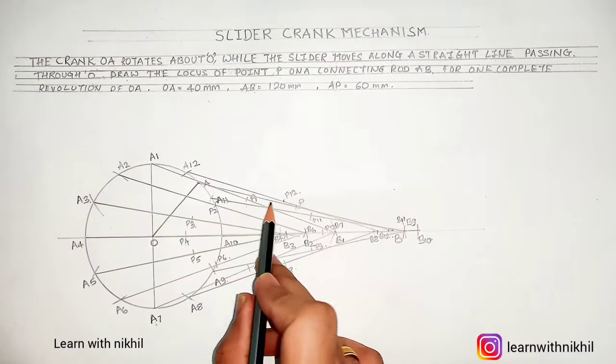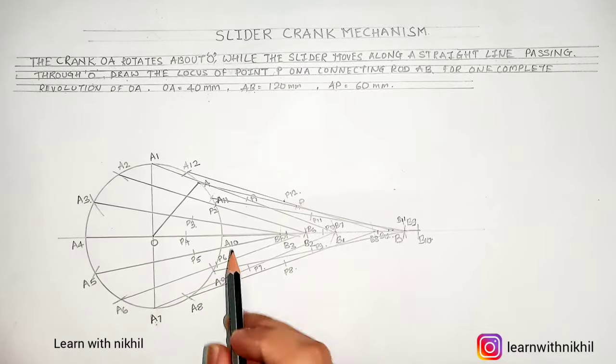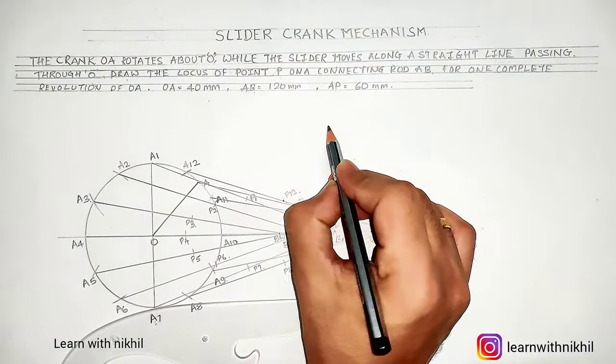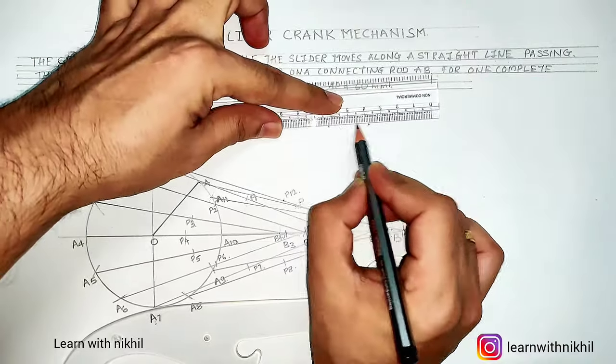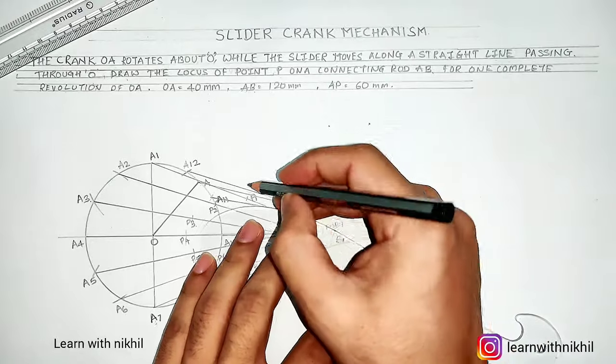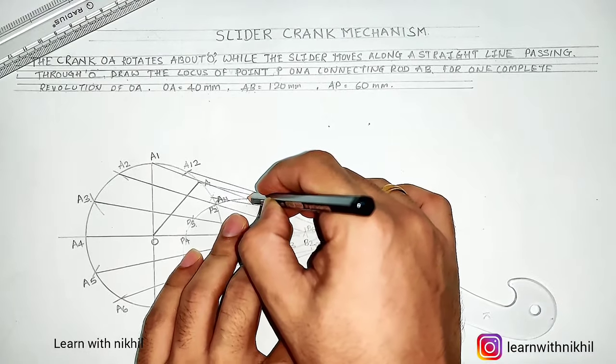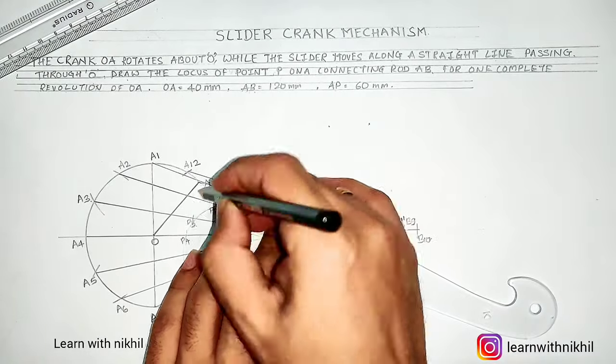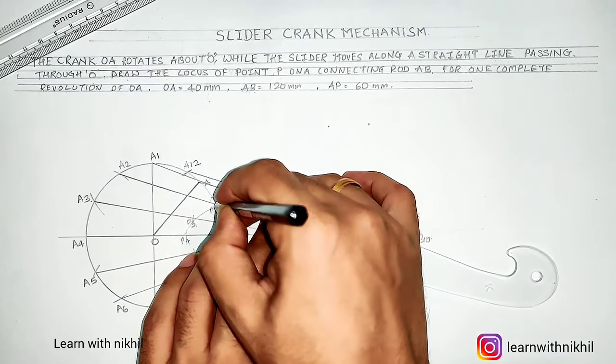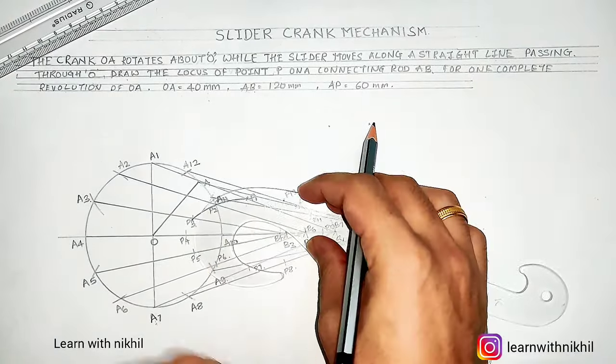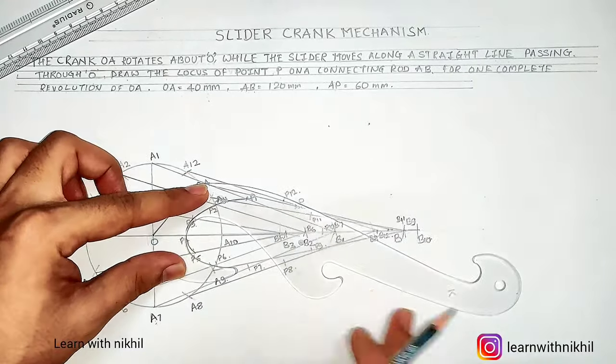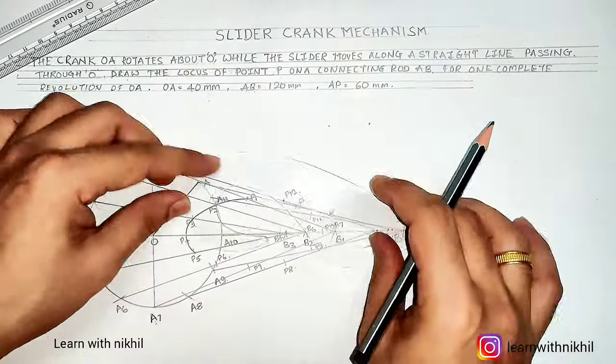Now after plotting all the points from P1 to P12, we have to join them. Now for joining that, we have to use a French curve. Now if we have two points, we join them using a scale, but for a curve we have to consider three or more than three points. Coincide any three points from the line and then draw a curve. You can use this French curve. Anyhow, you can use any curve, just you have to coincide three or more than three points.